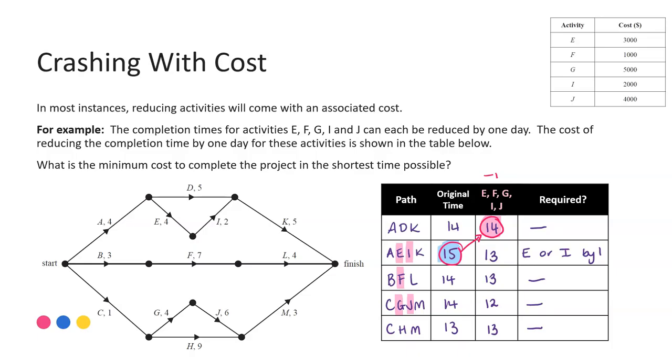And we can see from the table that we've got there, that activity E will cost us $3,000 and activity I will cost us $2,000. So obviously, if I only need to do one of them, I'm going to choose the cheapest option. So that means in order to achieve that minimum overall completion time with the minimum cost, the cost is going to be $2,000. And I'm doing that by reducing I by one day.